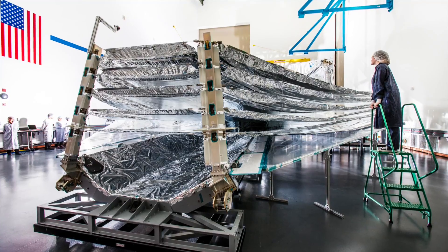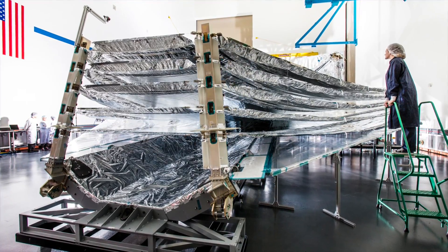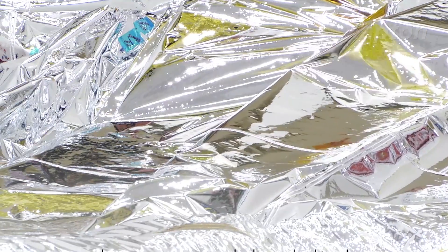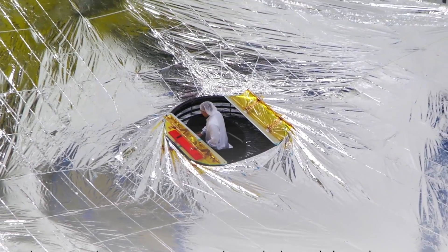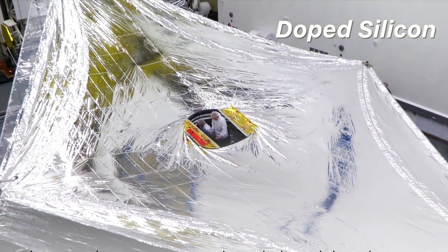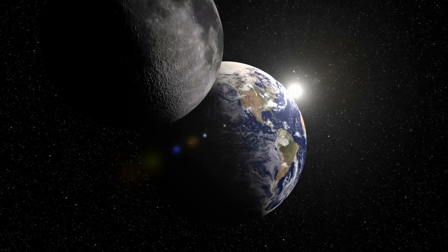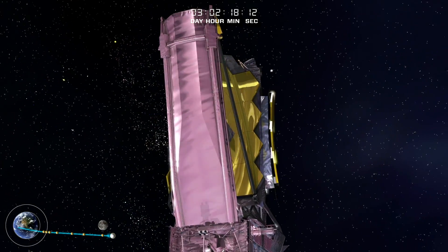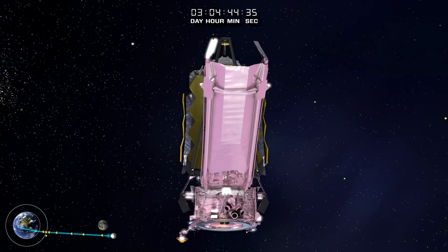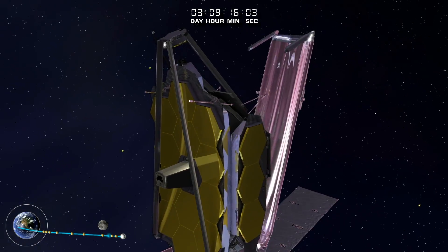The five-layer sun shield, each layer as thin as a human hair, is constructed from Kapton, which is a polyimide film with membranes specially coated with aluminum on both sides and a layer of doped silicon on the sun-facing side of the two hottest layers to reflect the sun's heat back to space. The sun shield was designed to be folded 12 times so that it fits within the Ariane 5 rocket payload.